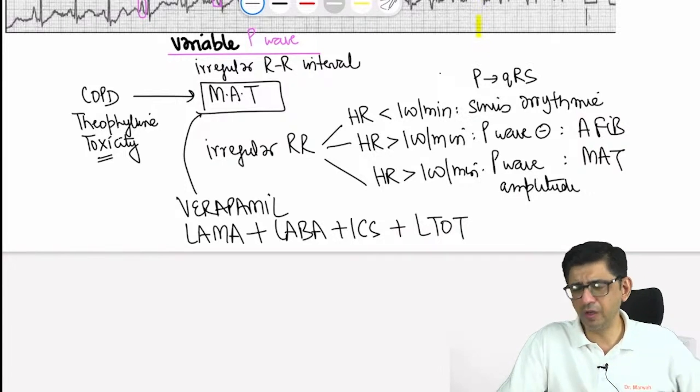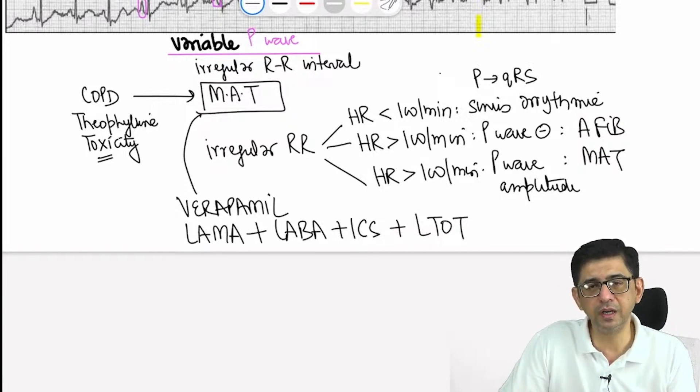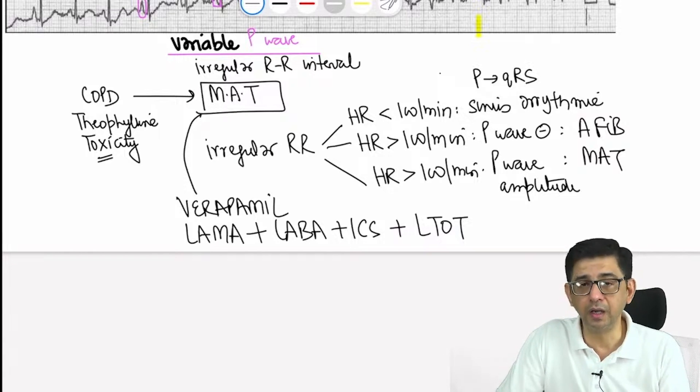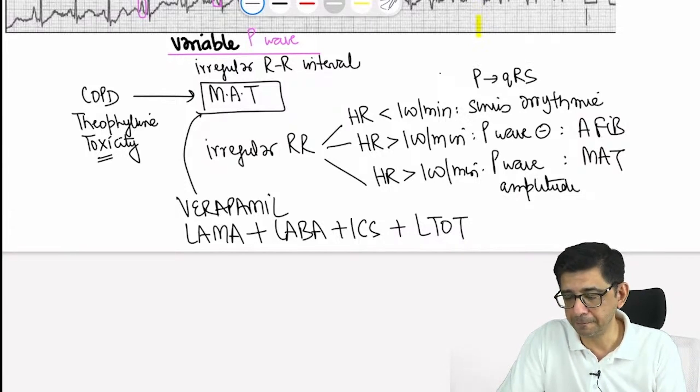Inhaled corticosteroids are given only when eosinophil count is elevated. Eosinophil counts more than 300 indicate response to inhaled corticosteroids. In some phenotypes, inhaled corticosteroids may not be very effective. In the majority of cases, you will see irregularly irregular pulse.